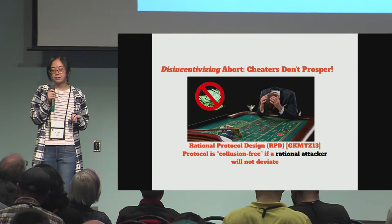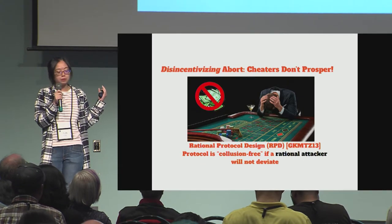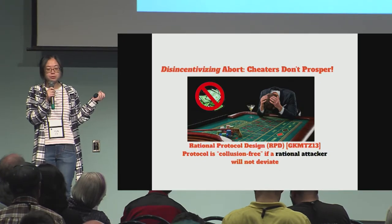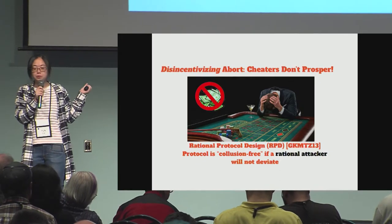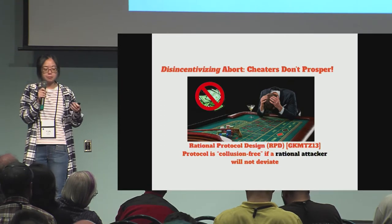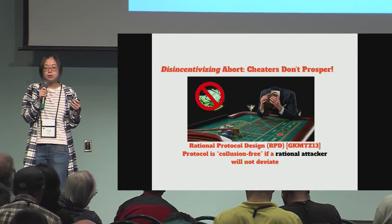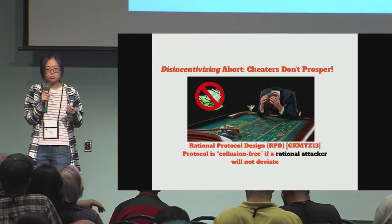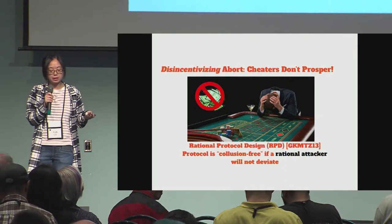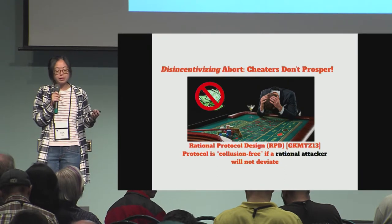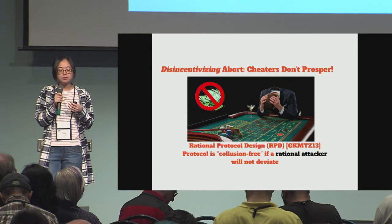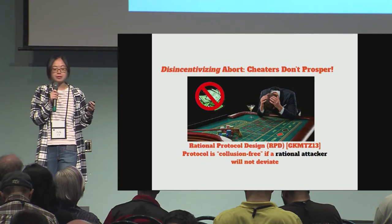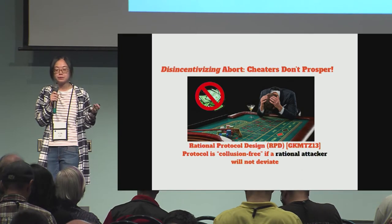Our protocols will be proven collusion-free in the model called Rational Protocol Design (RPD), which says that a protocol is collusion-free if a rational attacker won't deviate from it. We make it so that it doesn't make sense for a rational attacker to deviate, because doing so incurs a negative payoff for them.